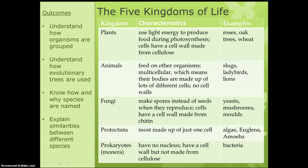Then we've got our final two groups. Protoctists are made up of just one cell — algae is an example, which might be easy to remember. And prokaryotes have no nucleus; they do have a cell wall but it's not made from cellulose. You can just remember bacteria for that one. You just need to know the groups, and it is the top three kingdoms that they're most interested in.